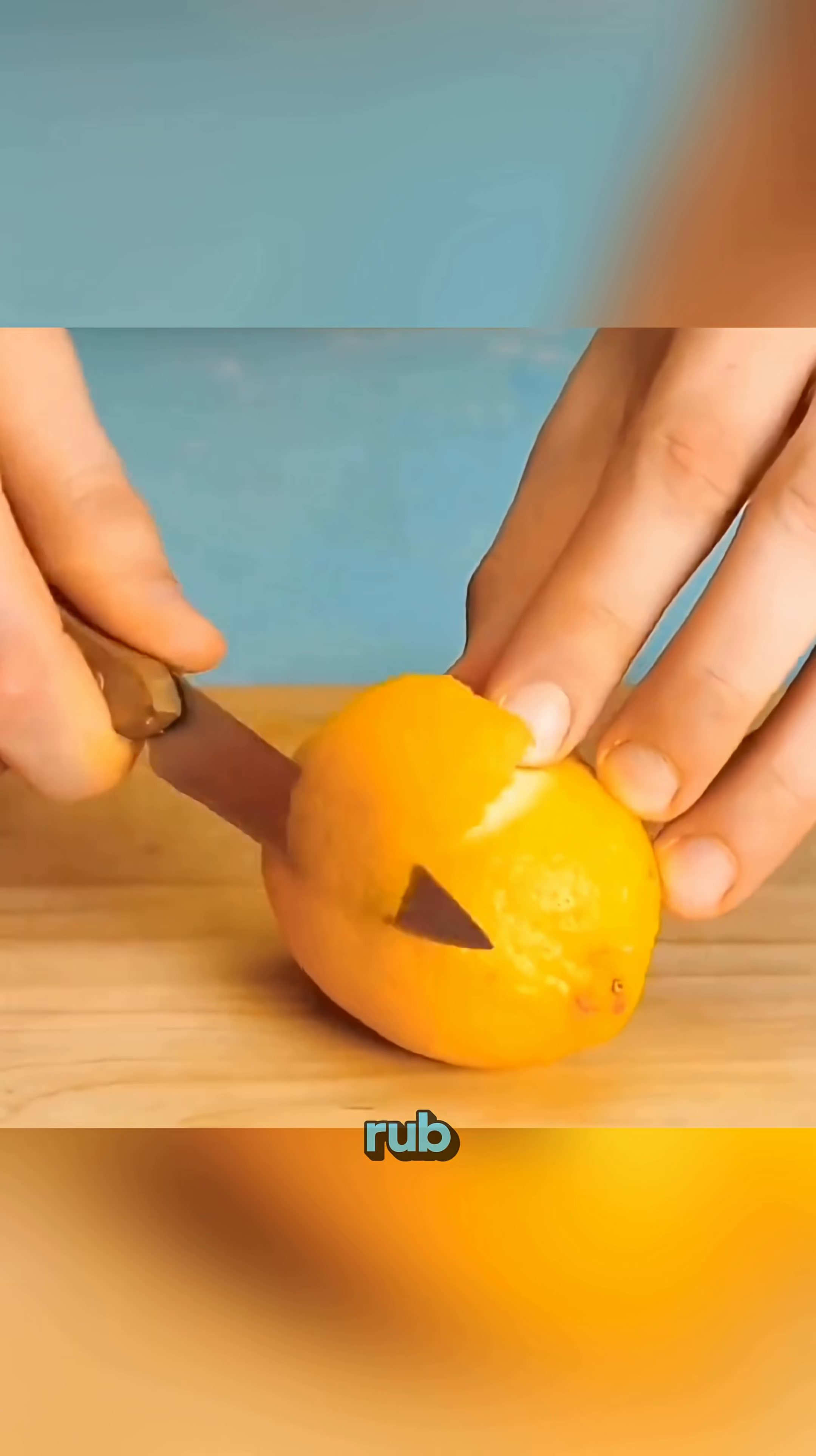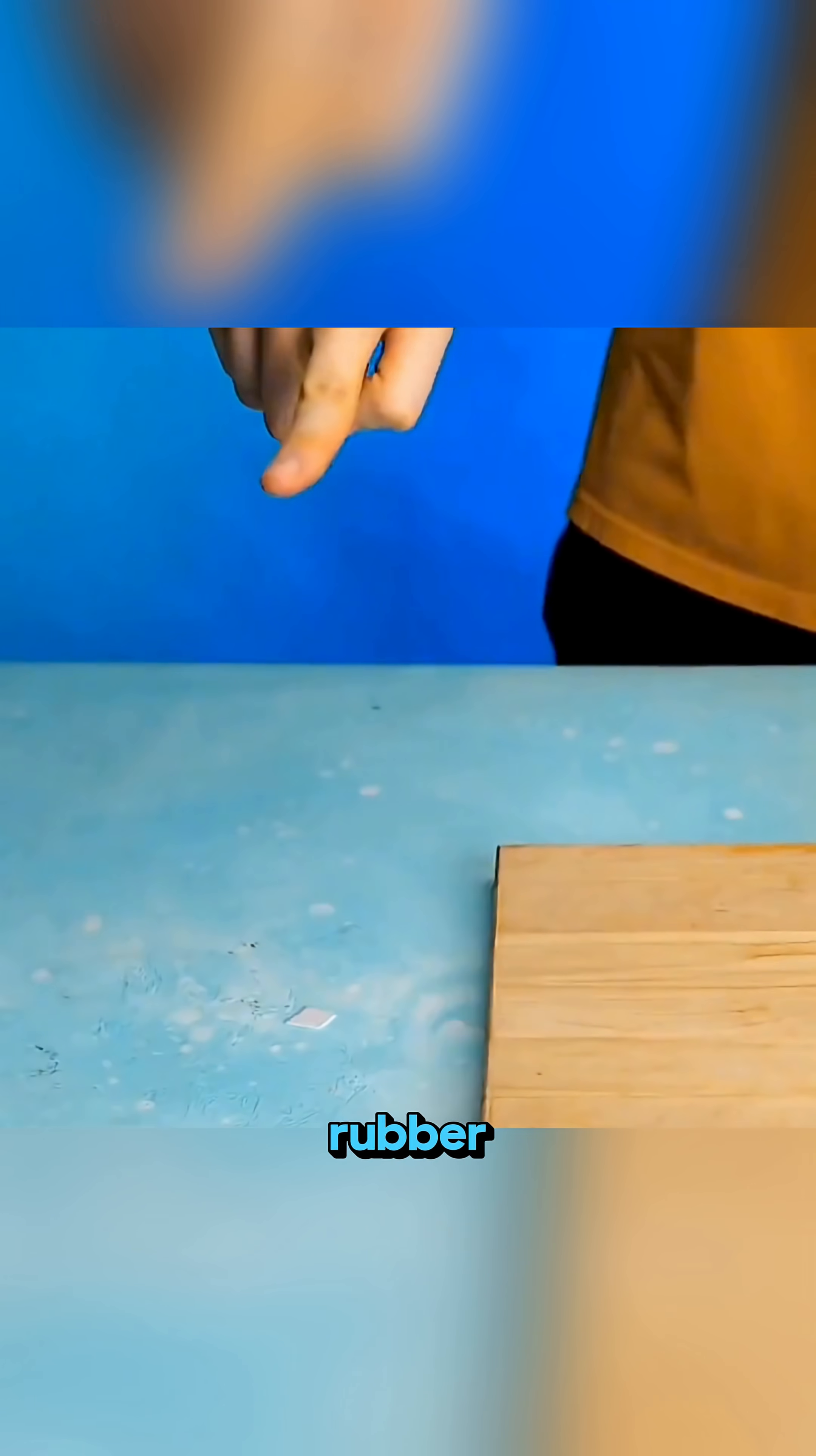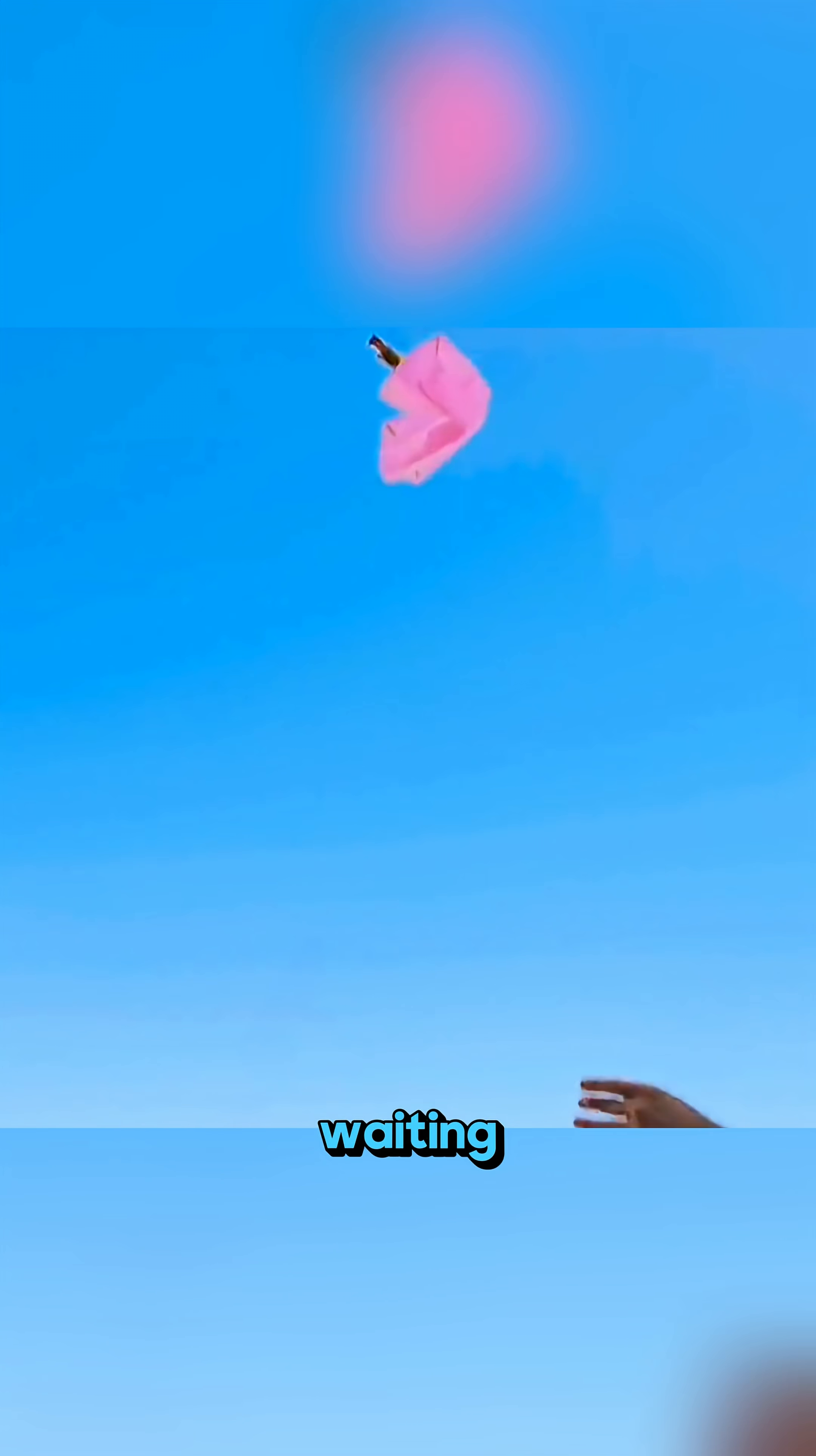Slice a piece of orange peel, rub the juice on your finger, and you can pop a balloon instantly because limonene breaks down the rubber. Everyday objects, simple steps, and the quiet beauty of science waiting to be discovered.